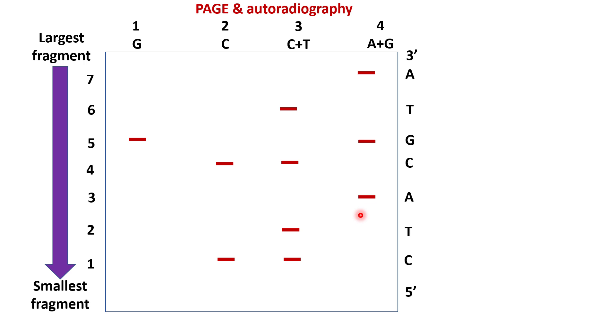Next lane represents a single band in A plus G, so the nucleotide is A since no band is present in tube 1 (G). The following lane shows bands in C and C plus T, so the nucleotide is C. Next lane contains bands in G and A plus G, so the nucleotide must be G.